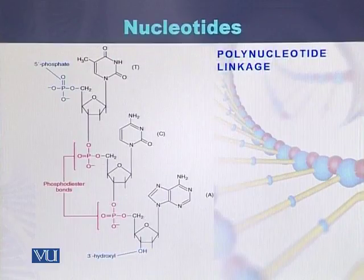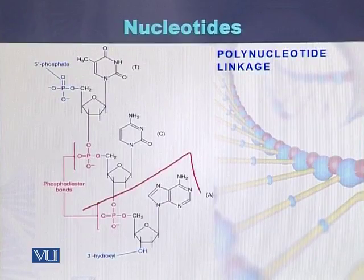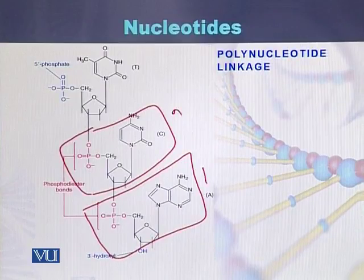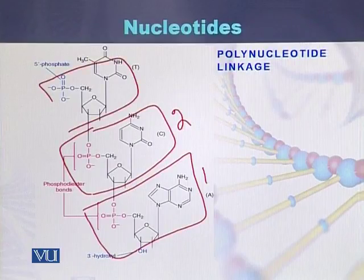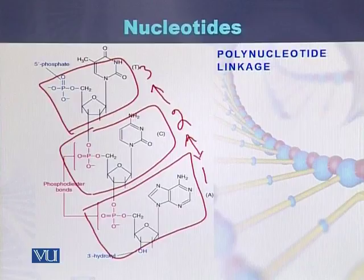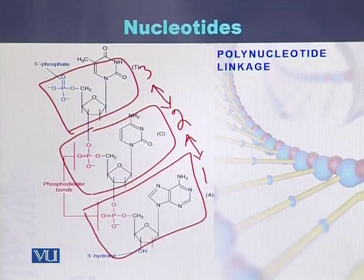What is the meaning of polynucleotide linkage? Looking at this diagram, this is one nucleotide and this is the second nucleotide. Nucleotide one is attached with nucleotide two, and nucleotide two is attached with nucleotide three. Polynucleotide means the nucleotides, which are the building blocks of DNA, are joined with each other — the second is joined with the third nucleotide. There is a linkage between nucleotide one and nucleotide two.